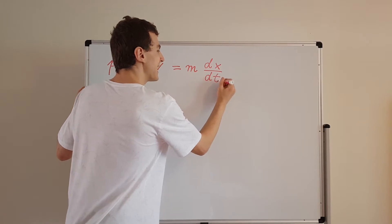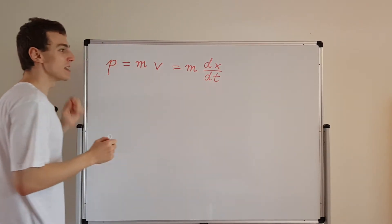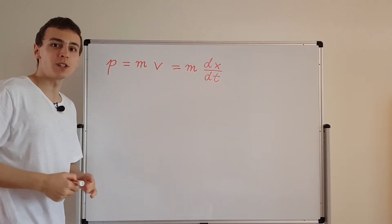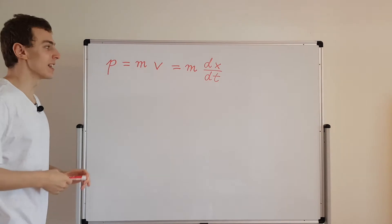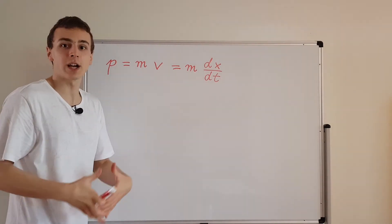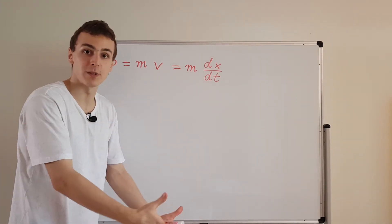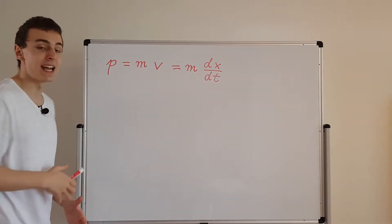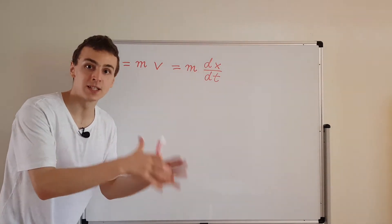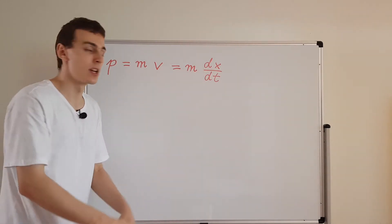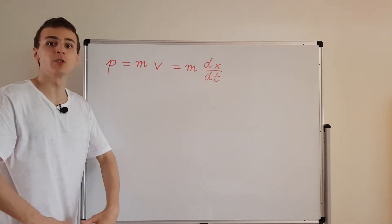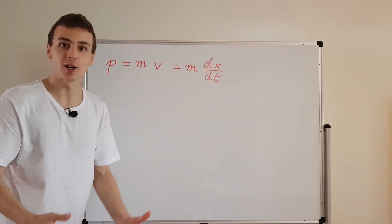But we can't exactly use this relationship in quantum mechanics, because in quantum mechanics these variables don't have defined values until we actually make a measurement. So we don't know what P is going to be until we make a measurement of the system. So what we have to deal with is expectation values and standard deviations.